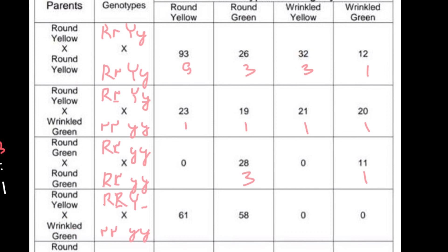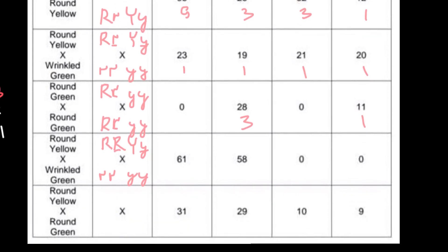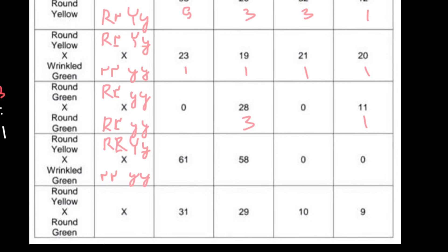For color: one parent is green (yy) and the other is yellow. In the progeny, yellow and green appear in a 1:1 ratio (50/50). This is exactly what we get when one parent is heterozygous (Yy) and the other is homozygous recessive (yy). So the first parent must be Yy. Therefore the first parent's complete genotype is RRYy, and the second parent is rryy.